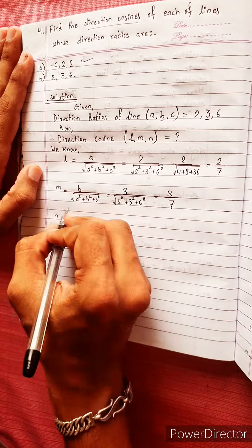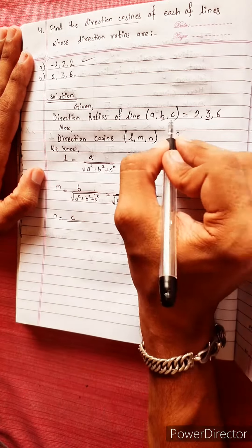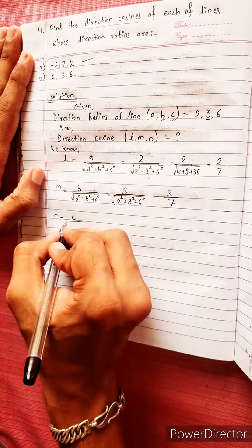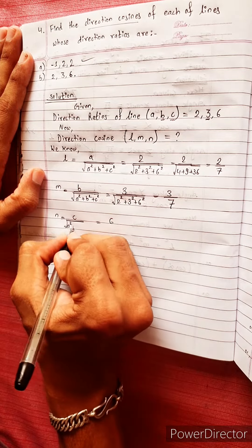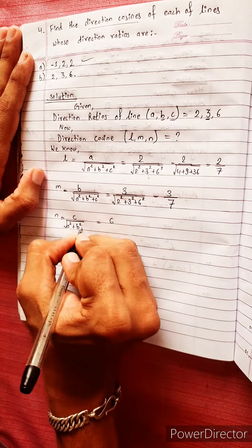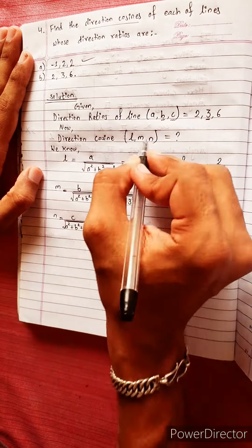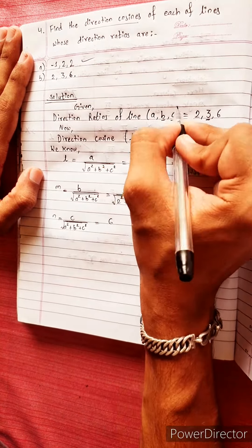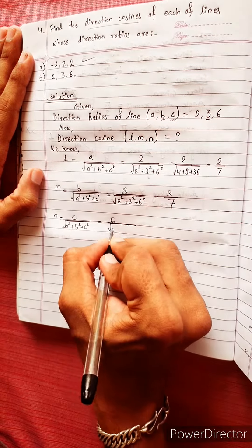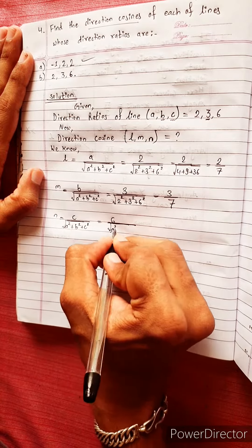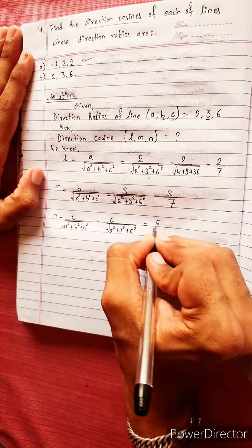N equals the z-axis component. C is called 6, so N = 6 divided by the square root of a squared plus b squared plus c squared — that is 2 squared plus 3 squared plus 6 squared — equals 6 by 7.